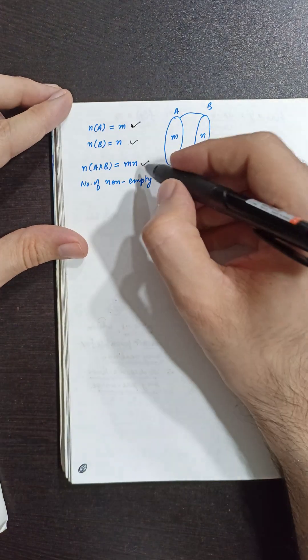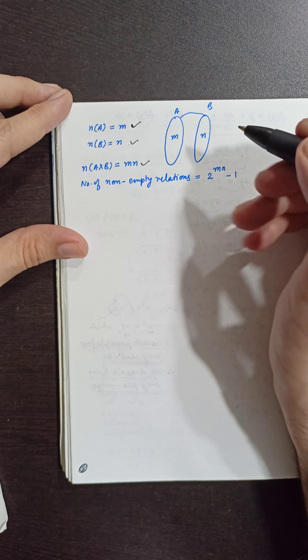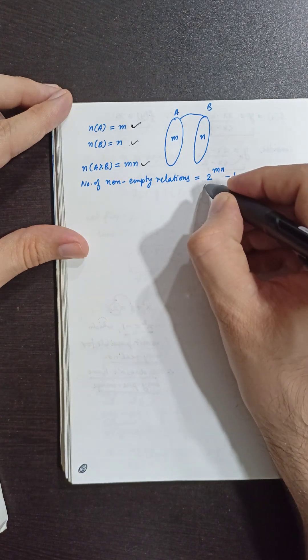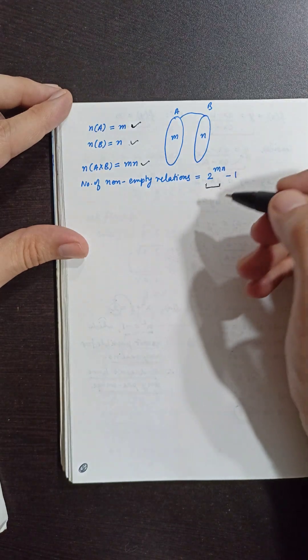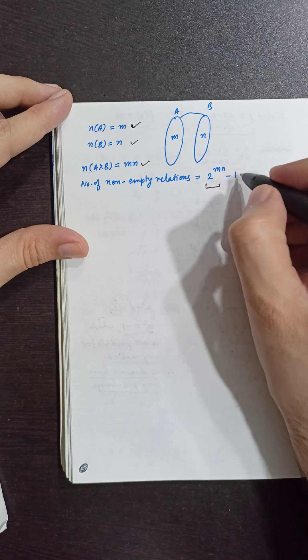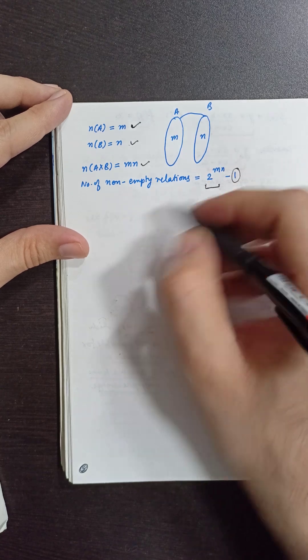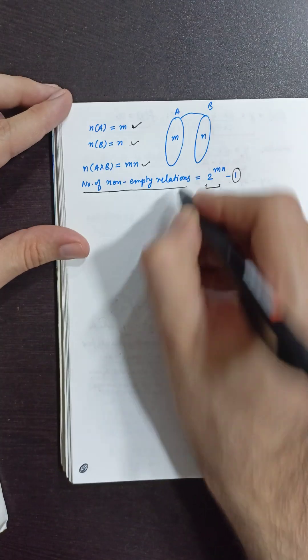Now the number of subsets - what are all the relations? There will be total 2 to the power MN subsets, and all of them will be a relation. Out of those, there will be one relation which is empty. If we subtract that, we'll get the answer for non-empty relations.